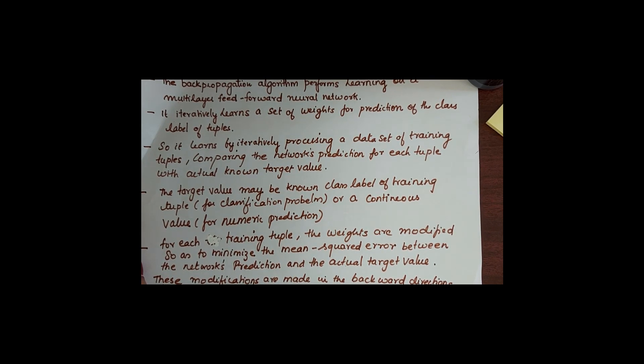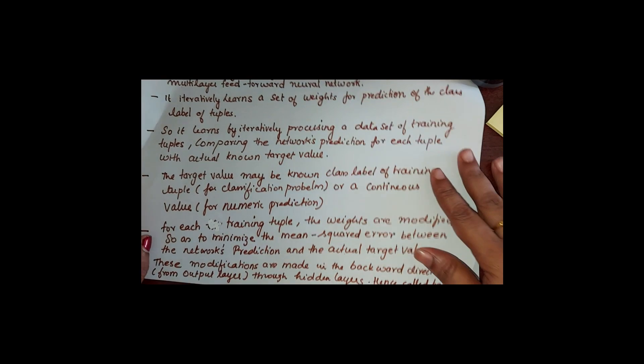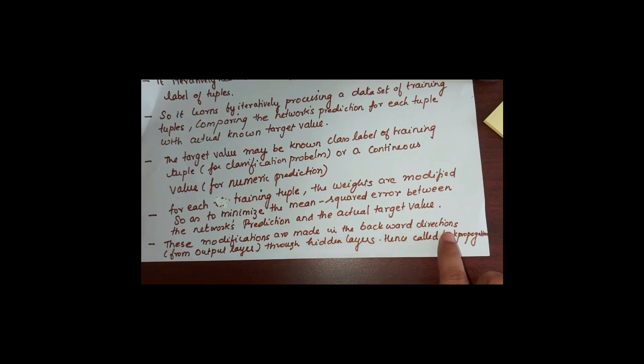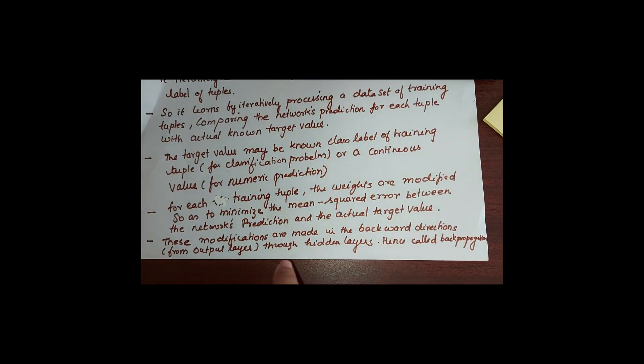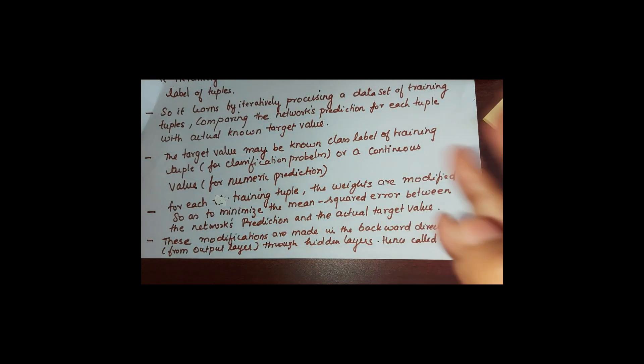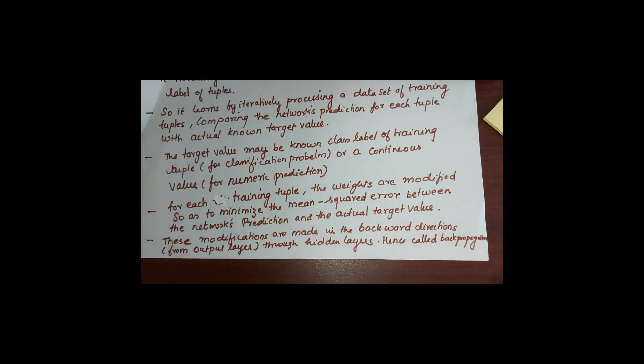If there is any difference between the actual value and the network predicted value, the modifications are made. And how these modifications are done? These modifications are made in a backward direction. That is from output layer, it will go to the hidden layer and thereafter it will be going back and back. Therefore, it is called as backpropagation algorithm.